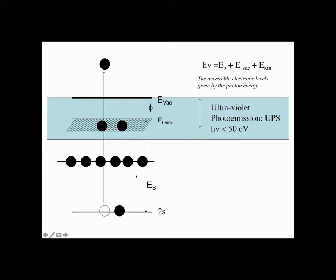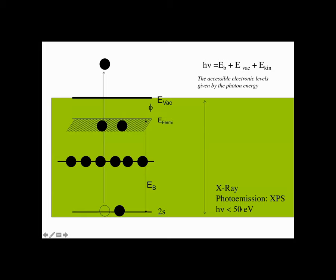Regarding photon energy: using very low photon energy (e.g., ultraviolet, below ~50 eV), you cannot access deeper core levels because they have binding energies much larger than the photon energy — the electron will never be emitted. Low-energy photons only give information about the Fermi level and valence band states. For XPS — to have emission from core levels — you need photon energies larger than about 50 eV. This is why we use X-rays.